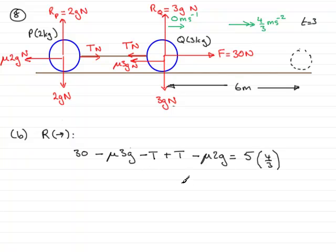So, cleaning this up, I could multiply through by 3, for instance, and I would have 30 times 3, which would give 90. I could group these two terms up. So, that's minus 5 mu g. But I'm timesing by 3, so that becomes minus 15 mu g. And timesing this term by 3 gives me 20.